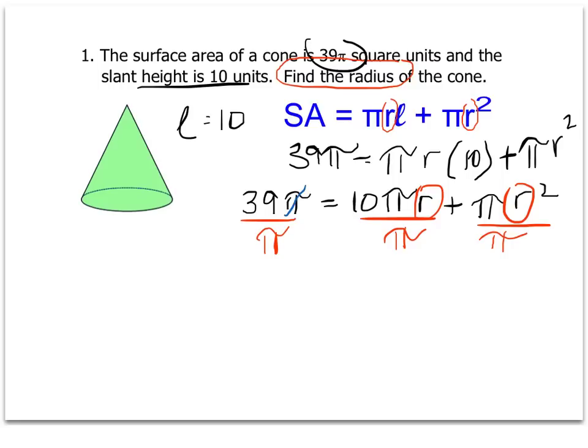So when I divide this term by pi, those cancel out, and I'm just left with a 39. Cancel out the pi here, I'm left with 10 r. And cancel out the pi here, and I'm left with positive r squared.